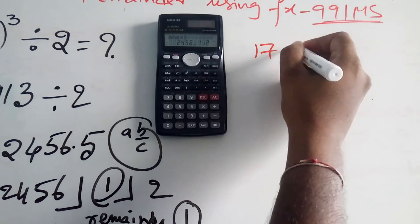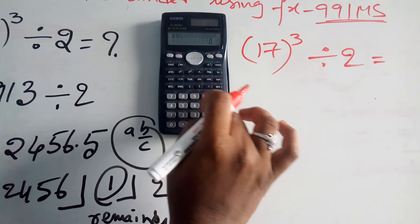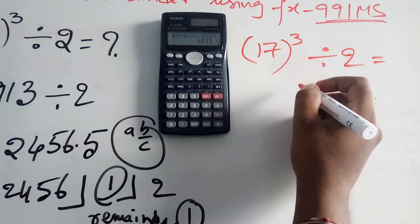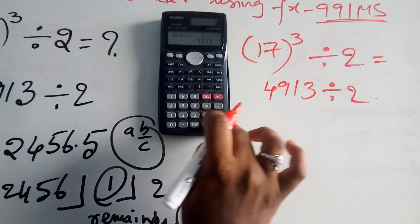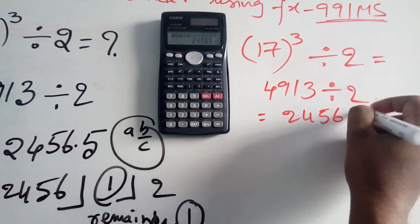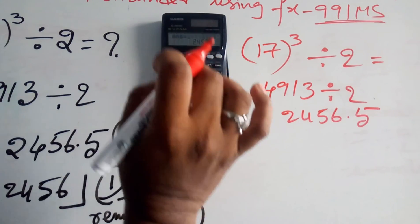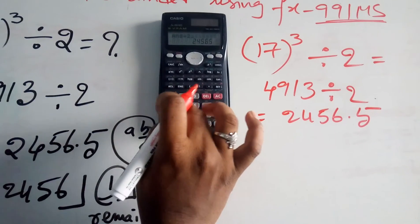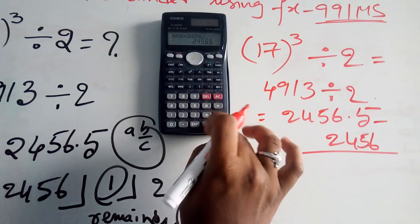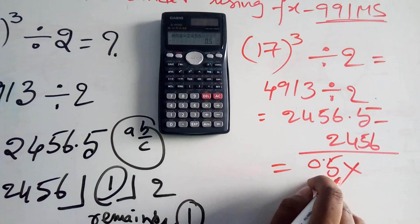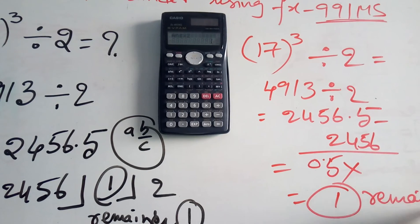Second method: 17 power 3 mod 2. Enter 17 power 3 — that equals 4913. Divide by 2 — equals 2456.5. Subtract the whole number part: 2456.5 minus 2456 equals 0.5. Then multiply 0.5 by 2 — you get 1. The remainder is 1. This is the second technique to find the remainder easily.